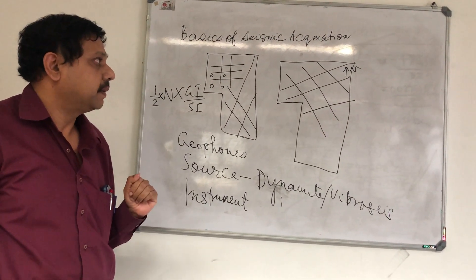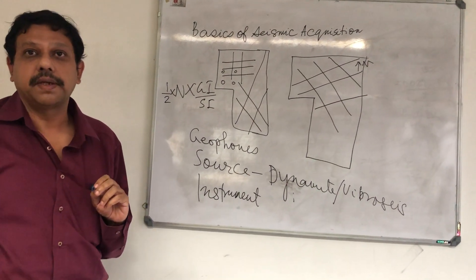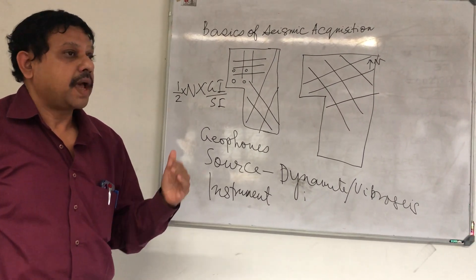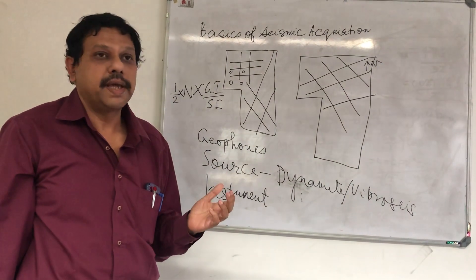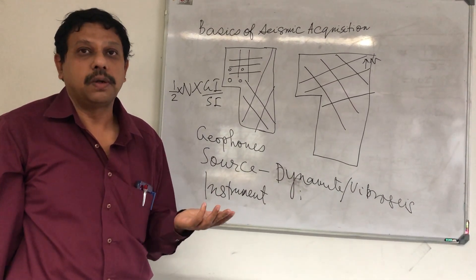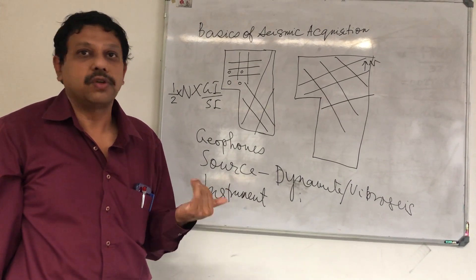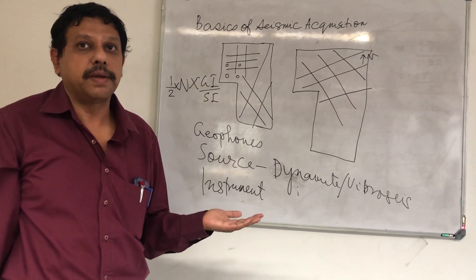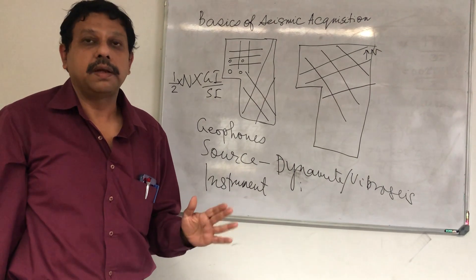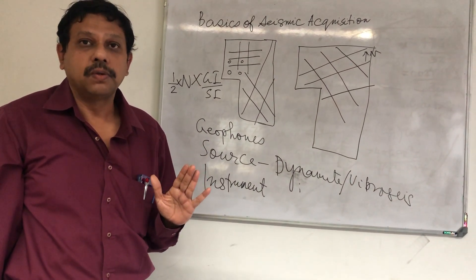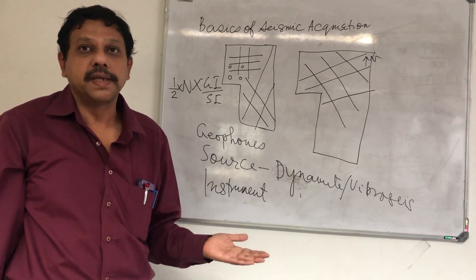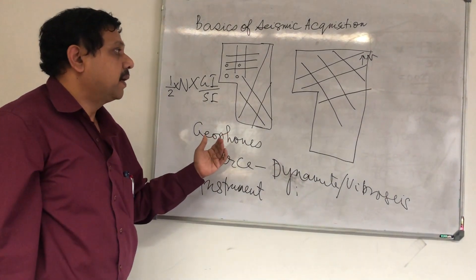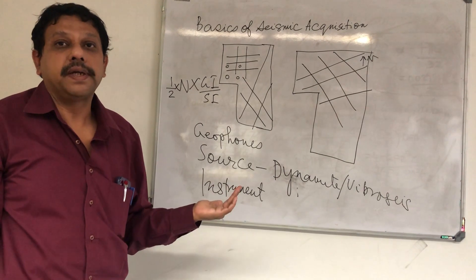Once the planning is done, you have done your refraction seismic survey and understood what is the depth to the shot hole. This depth of the shot hole is utilized for the reflection survey, because your shot hole depth should be more than the low velocity zone which you have found from the refraction. You also have done an optimization between the shot hole depth and the charge size, and based on that you have taken a value for the shot hole depth and also how many kilograms of charge you will be using — whether it is 1 kg, 3 kg, 5 kg, or 6 kg. Now we will talk a little bit about the type of geometry we will be utilizing.